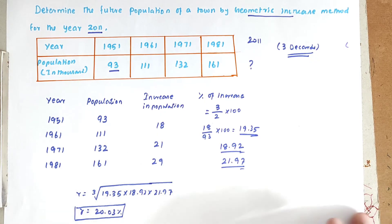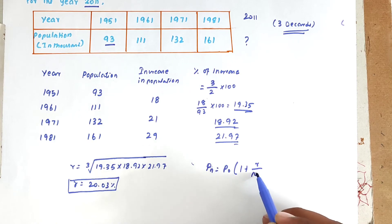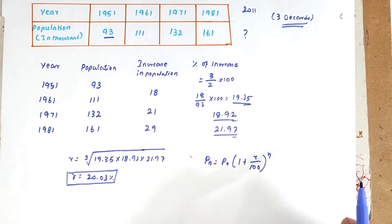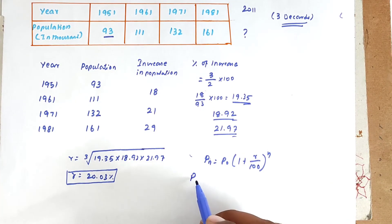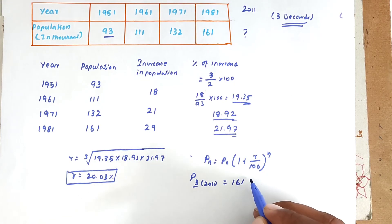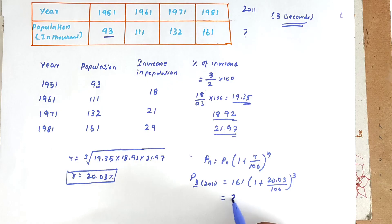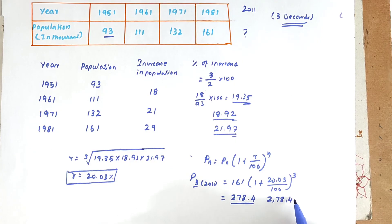Next, we can find out the population using the formula: Pn equals P0 into (1 plus r by 100) whole power n. We need to find P3 for 2011, which is three decades from 1981. The base population is 1,61,000. So P3 equals 1,61,000 into (1 plus 20.03 divided by 100) whole power 3. Solving this, we get 278,400 as the population for 2011.